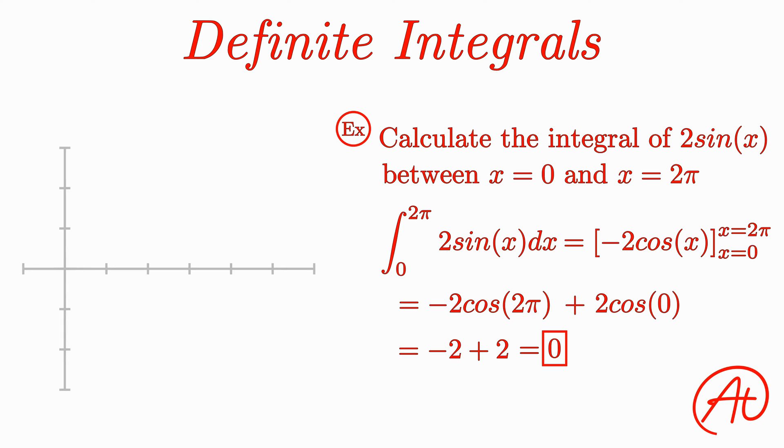To see how we got an answer of 0, let's draw our original function of 2sin(x). For this problem, we wanted to evaluate the integral from 0 to 2π.